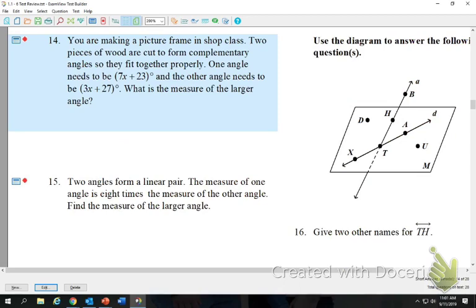All right, so number 14, you are making a picture frame in shop class. Two pieces of wood are cut to form a complementary angle so they fit together properly. One angle needs to be 7x plus 23 degrees, and the other angle needs to be 3x plus 27 degrees. What is the measure of the larger angle? So what is the important word in this word problem? Complementary. What does that tell me? To add up to 90.